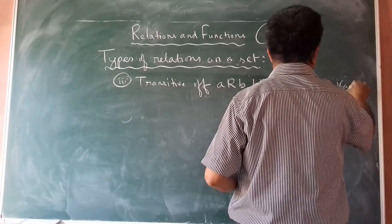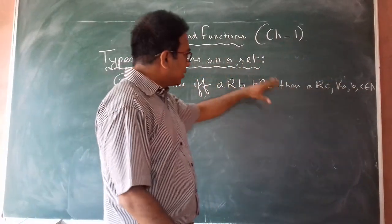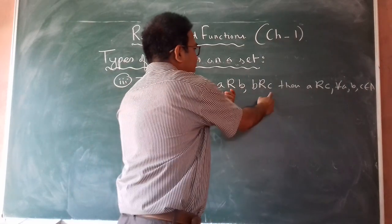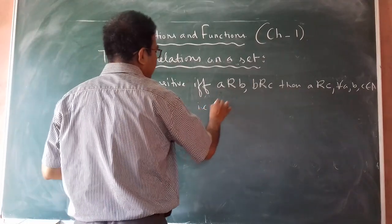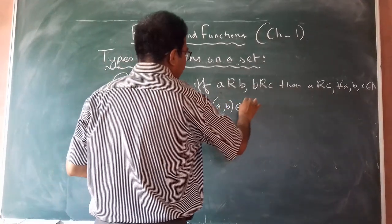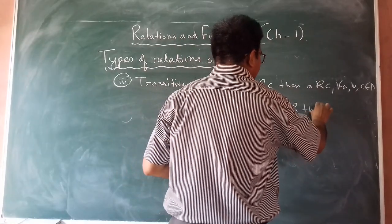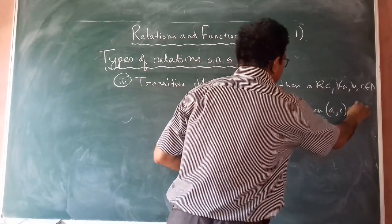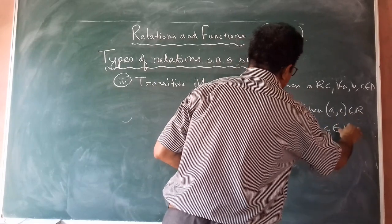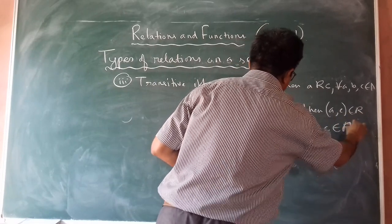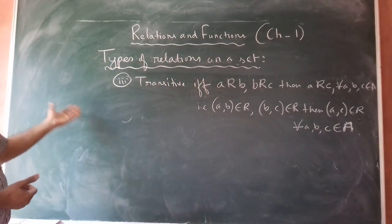The third type is transitive relation. For every a, b, c belonging to A, if a is related to b and b is related to c, then we must have a related to c. That is, if (a, b) belongs to R and (b, c) belongs to R, then we must have (a, c) belongs to R, for every a, b, c belonging to A. This is called the transitive relation.